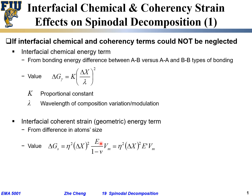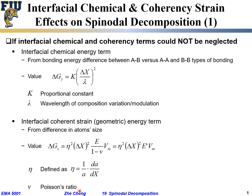We can simplify further by using E-prime, a related Young's modulus term. Here, eta is defined as one over the lattice constant a, times how much the lattice constant a changes with respect to composition. So eta measures how fast the lattice parameter changes with respect to compositional fluctuation. Mu is Poisson's ratio. With these, we can estimate the coherency strain energy term due to the difference in atom size.